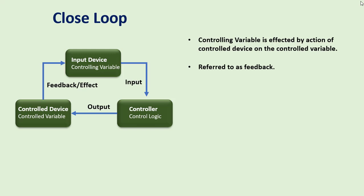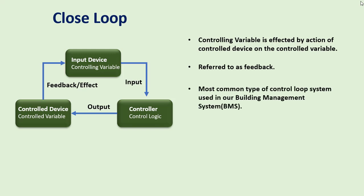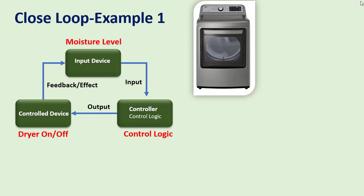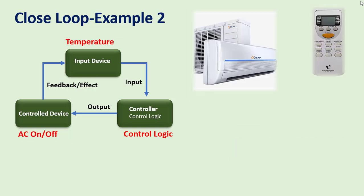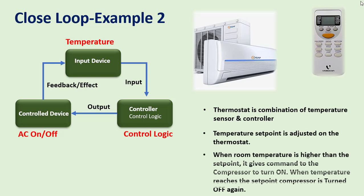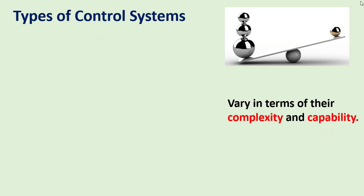In a closed control loop, the controlling variable is affected by the actions of the control device on the controlled variable — this is referred to as feedback. This is the most common type of control loop used in BMS. For example, if we measure the moisture level of the laundry and feed that data to the controller, the controller will compare the moisture level to a setpoint, and when it drops below a certain level the dryer will be turned off. Another example is temperature control inside a room using a thermostat — a combination of temperature sensor and controller. When room temperature is higher than the setpoint it commands the compressor to turn on, and when temperature reaches the setpoint the compressor is turned off.